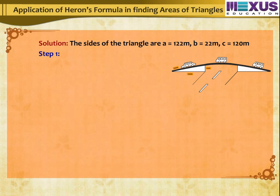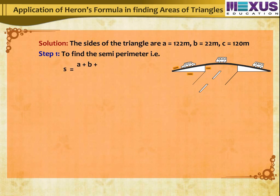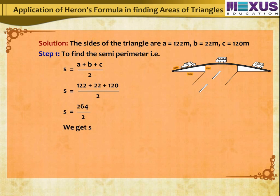Step 1: To find the semi-perimeter, S = (A + B + C) ÷ 2. By substituting we get S = 132m.